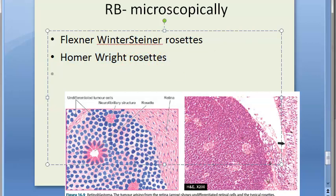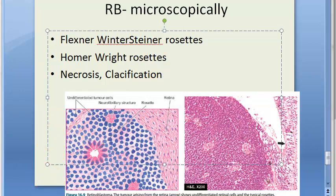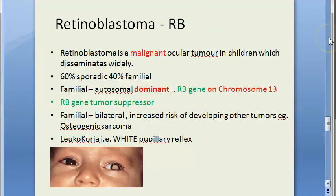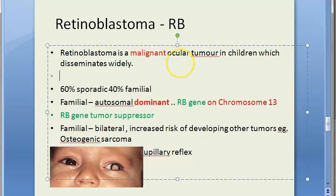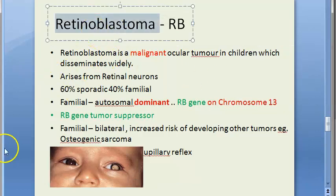There will also be necrosis and calcification. The tumor can disseminate in many directions — into the vitreous, optic nerve, retina, and even into the brain. Remember, retinoblastoma arises from retinal neurons. That's all about retinoblastoma.